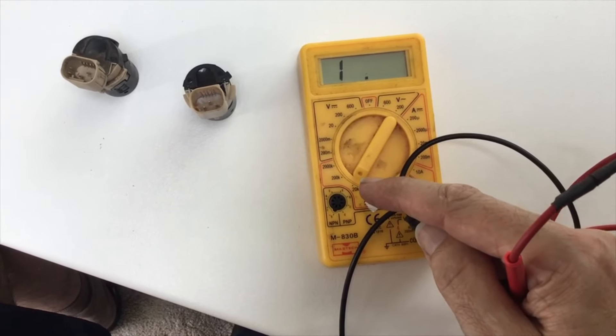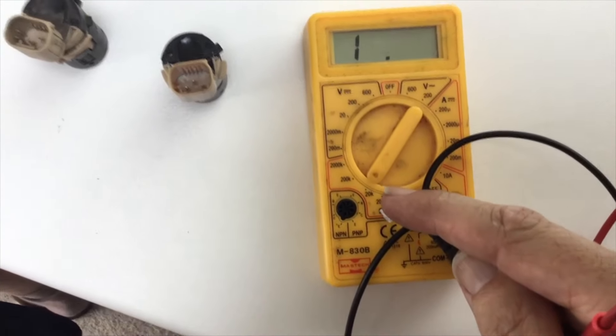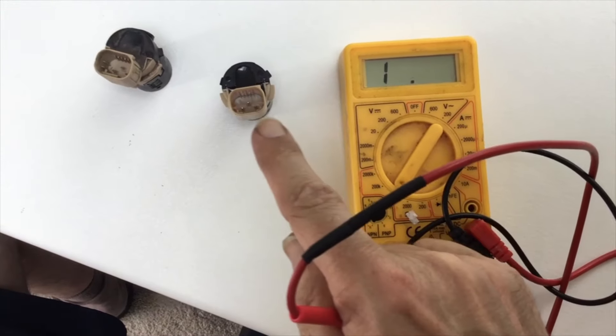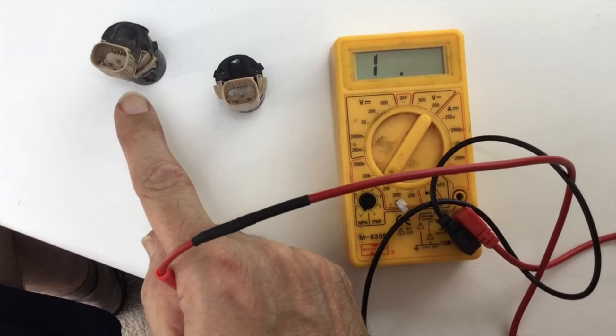Also, you can see I've reduced the setting on the multimeter right down to 20K. So it's not on 2000K anymore, it's on the 20K.